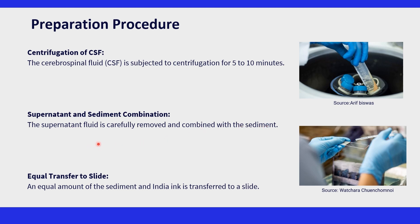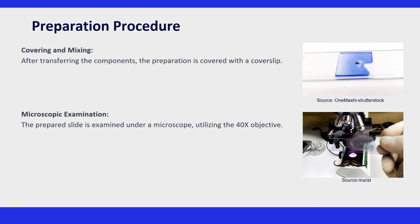Next comes slide preparation. Transfer equal amounts of India ink and the sediment to the slide and combine them. This mixing step is crucial to ensure an even distribution of the ink over the specimen. When the sediment and ink are mixed, place a cover slip — this is essential for creating a thin and even layer for microscopic examination. Then use the 40x objective on the microscope for detailed observation of the stained sample.